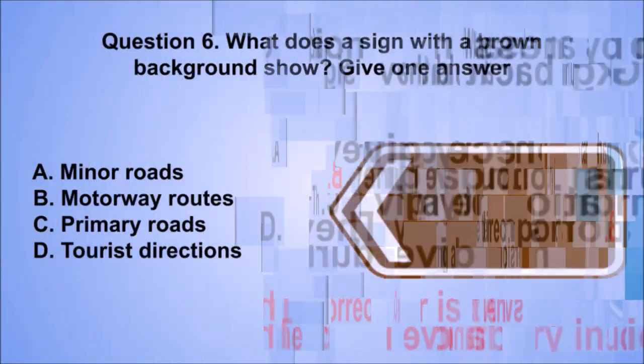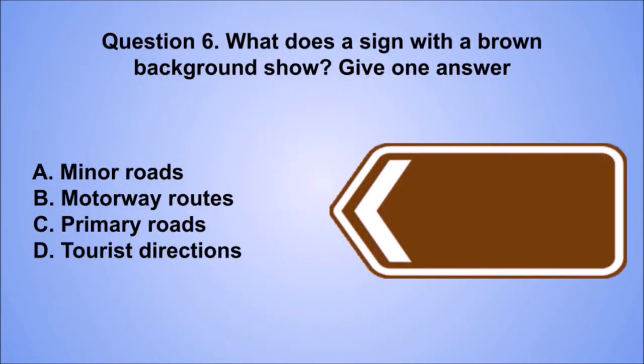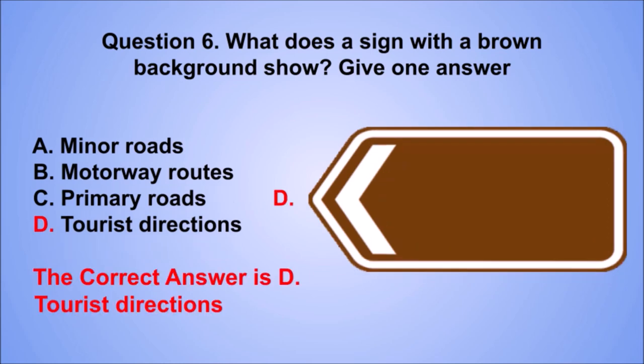Question 6. What does a sign with a brown background show? Give one answer. A: Minor roads. B: Motorway routes. C: Primary roads. D: Tourist directions. The correct answer is D: Tourist directions.